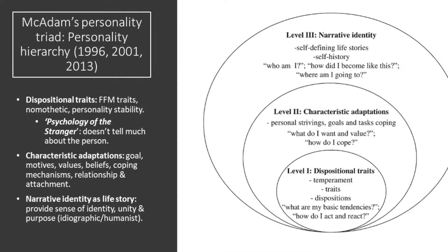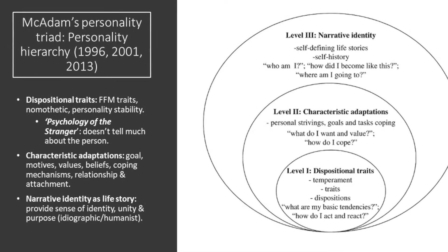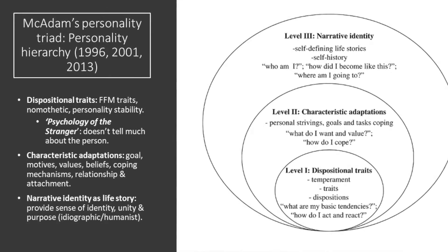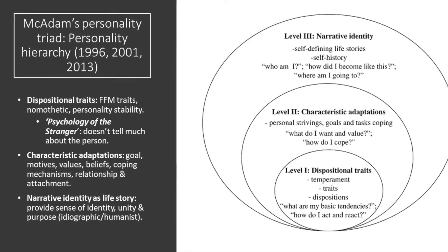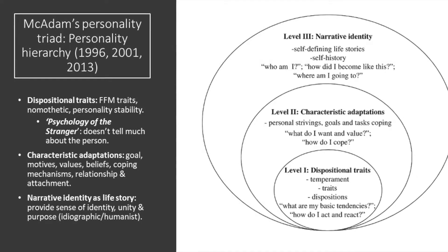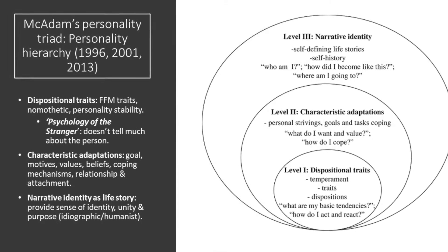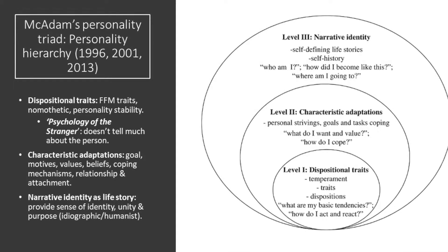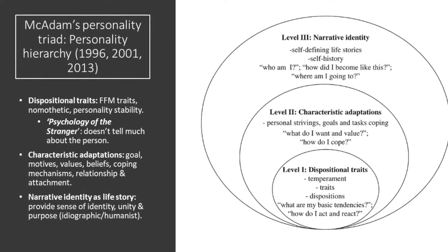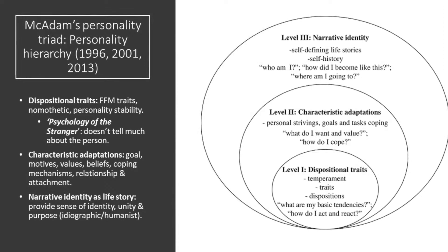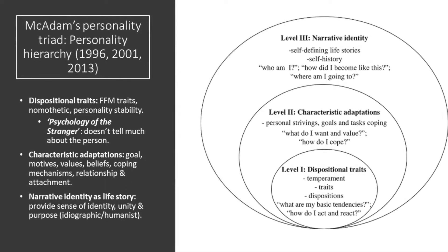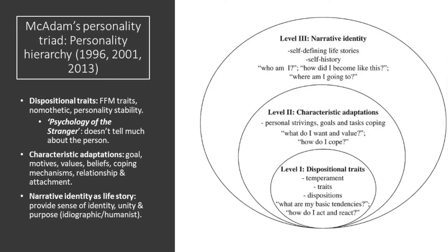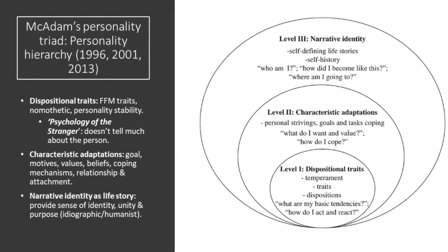The next level in McAdams' Personality Triad is characteristic adaptations, which are used by individuals to adapt to the world and to others. This includes the individual's goals, motives, values, beliefs, coping mechanisms, attachments, and relationships.